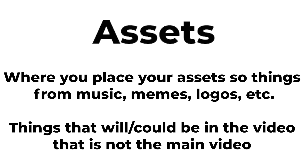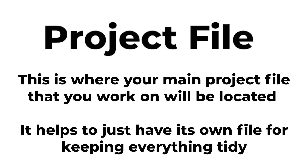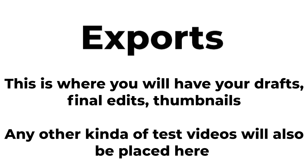Assets are things like images, meme images, music — really anything that isn't your original footage that you are going to use in the project or may use in the project. Then we have the project file, which is just where you'll be keeping the main project saves — it mainly helps with organization rather than having everything be loose. Then we have exports, which are your final finished versions of projects, but they could also be things like test drafts.